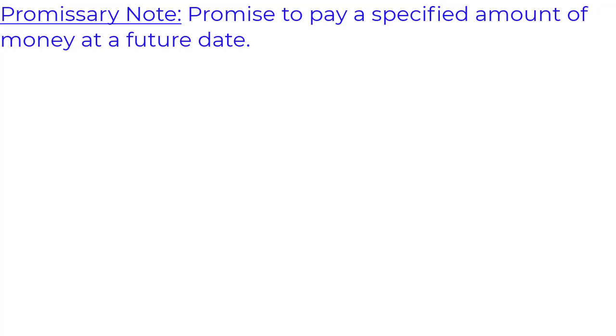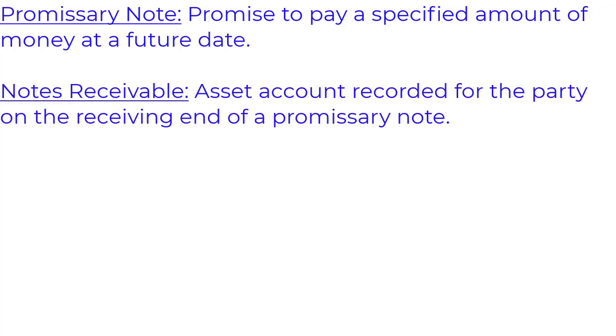Today I want to talk a little bit about how to do the journal entries related to notes receivable, but first let's discuss what a promissory note is. A promissory note is a promise to pay a specified amount of money at some future date, typically with interest. The party on the receiving end of a promissory note is said to have a notes receivable, which is an asset account in some ways similar to accounts receivable.